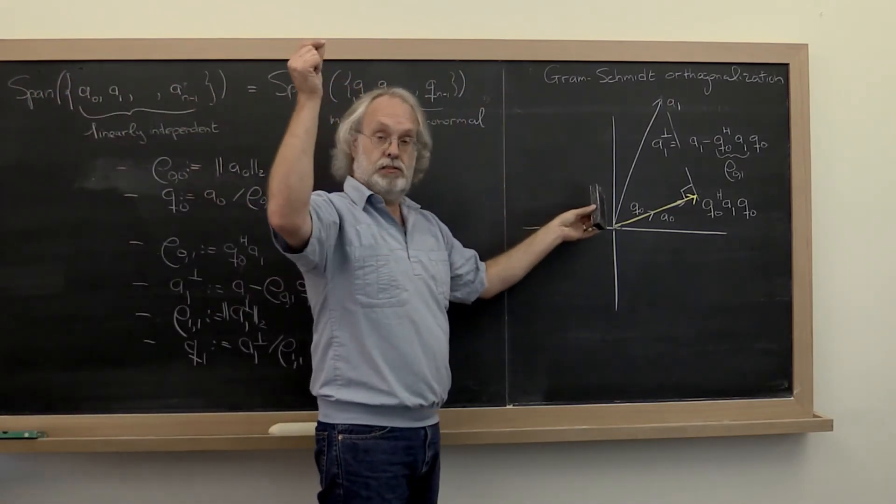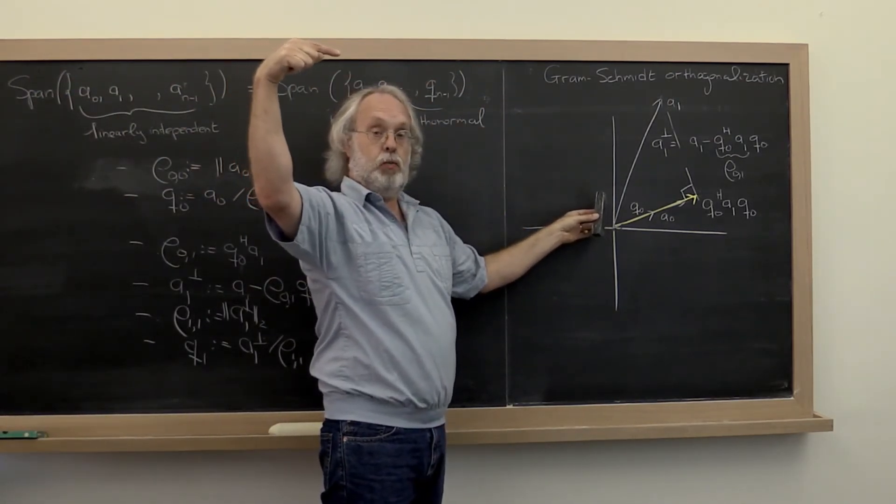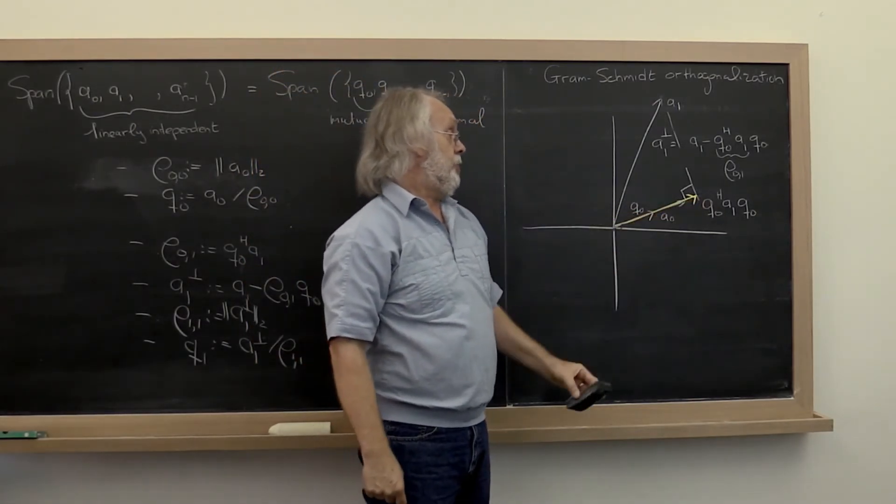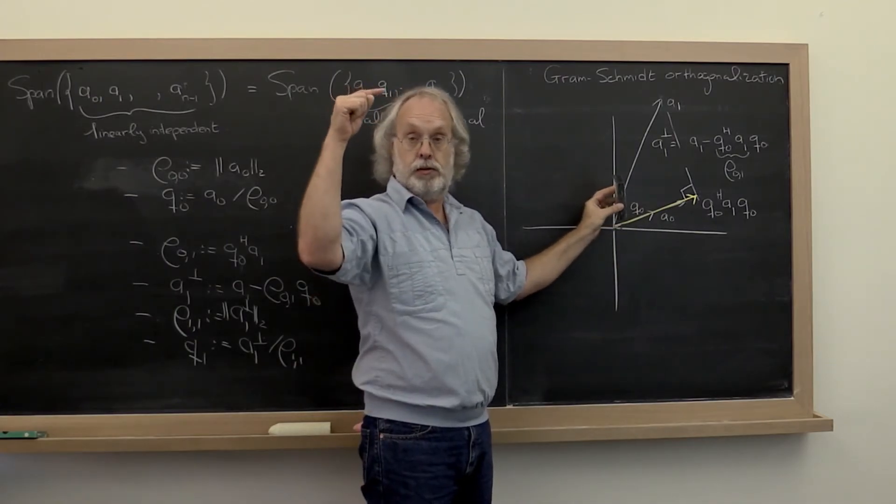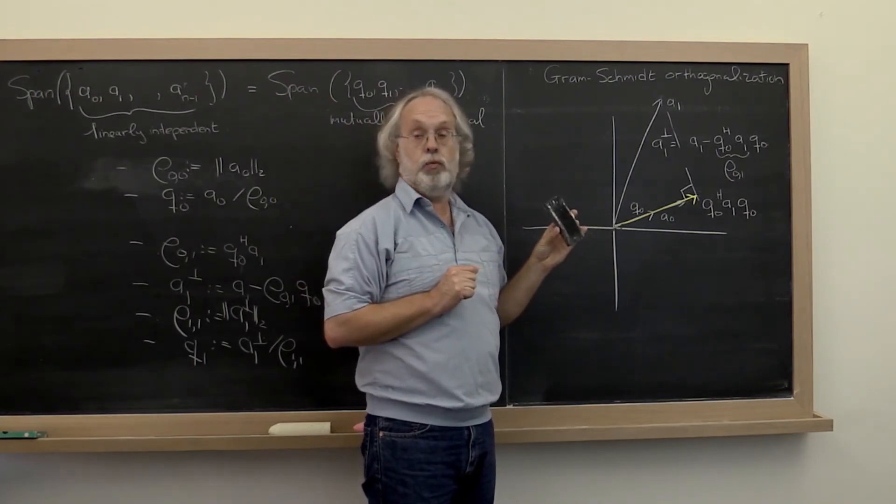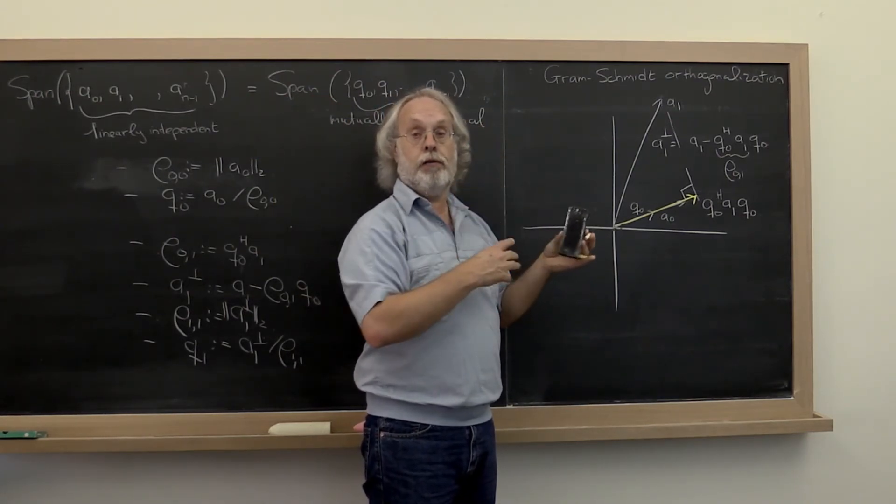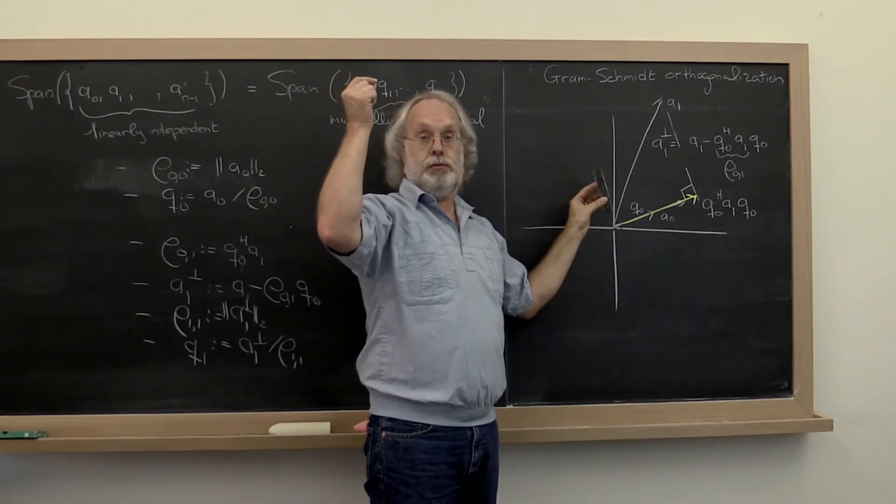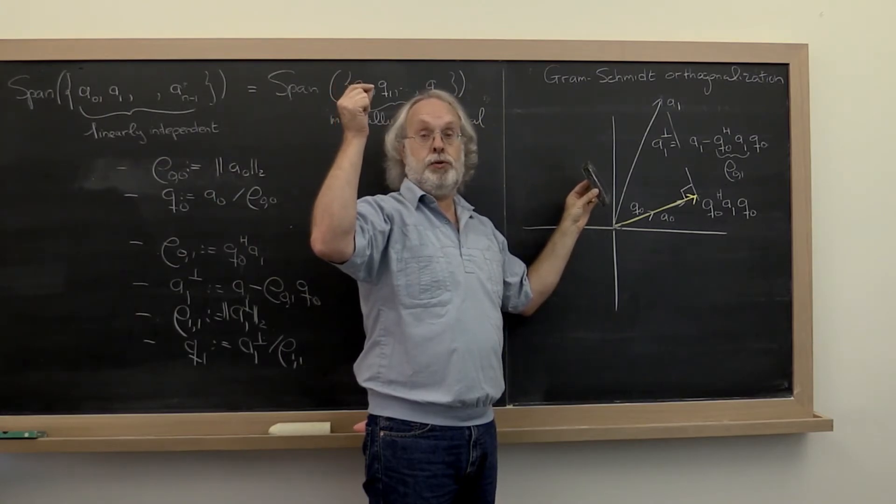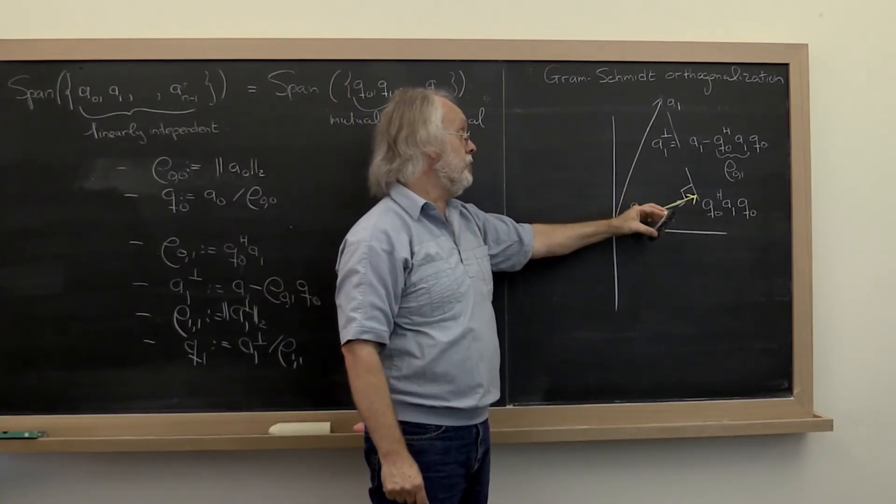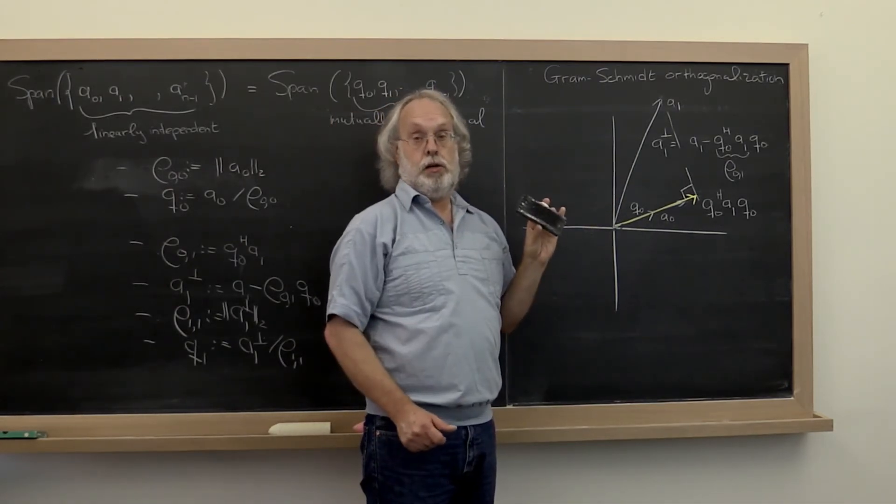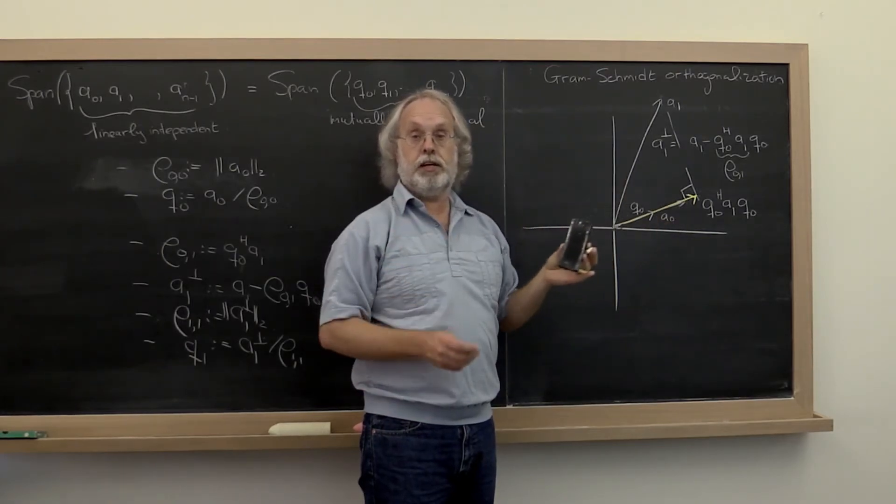If there is another vector, let's say it sticks up this way. What you want to do is you want to compute the component in the direction of q0. And then you want to compute the component in the direction of q1. You want to subtract those off of this vector a2. That gives you the component of a2 that's perpendicular to both q0 and q1. And then you want to make that of length 1.